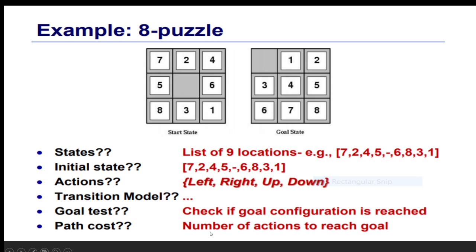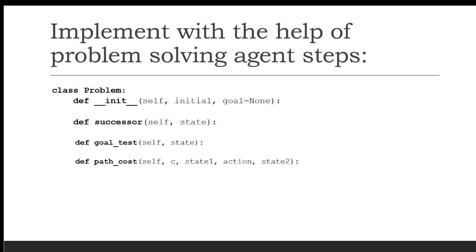Path cost: the actions will be the same, and the cost is 1 for each step.